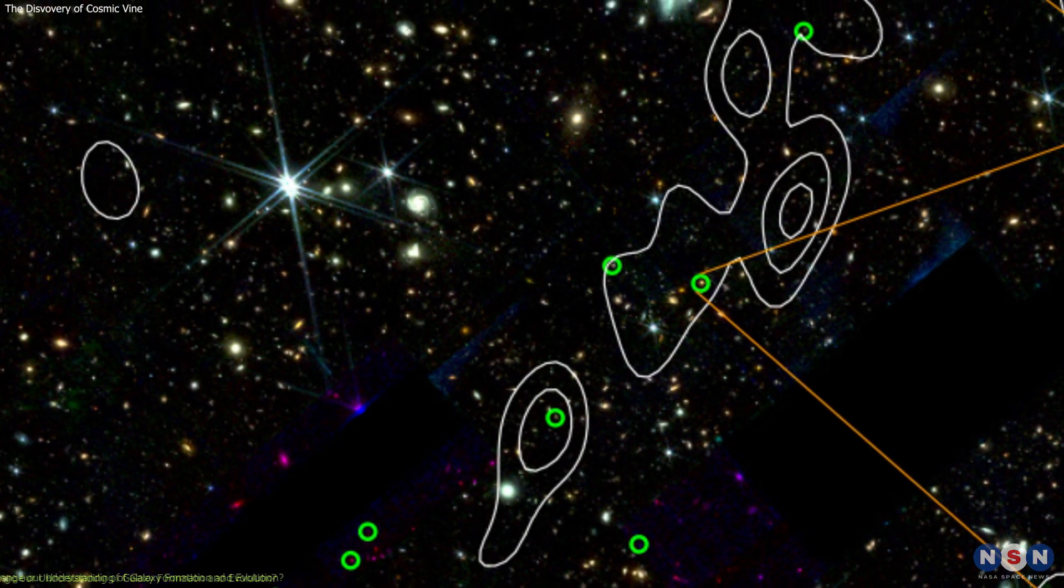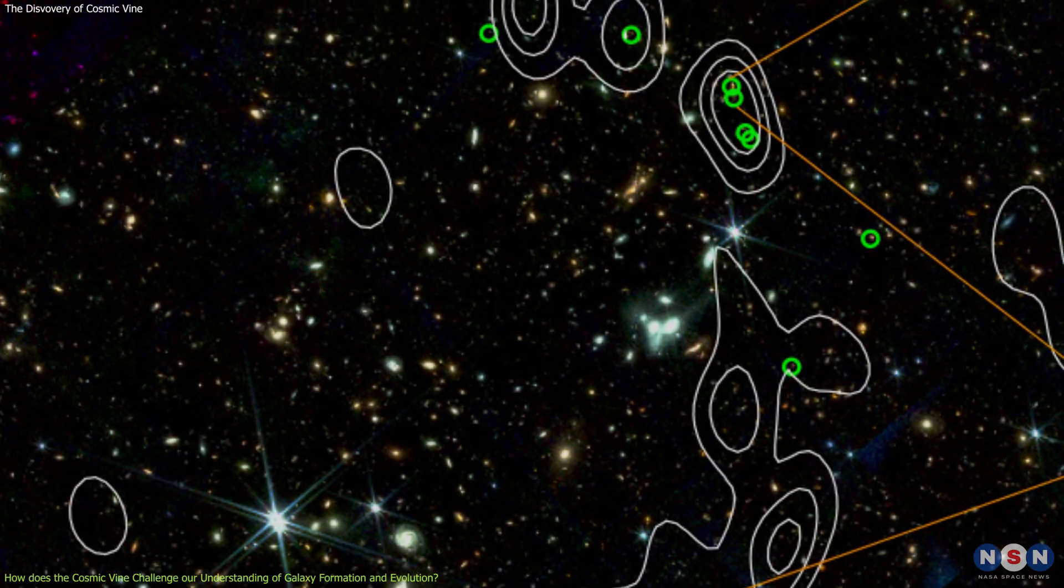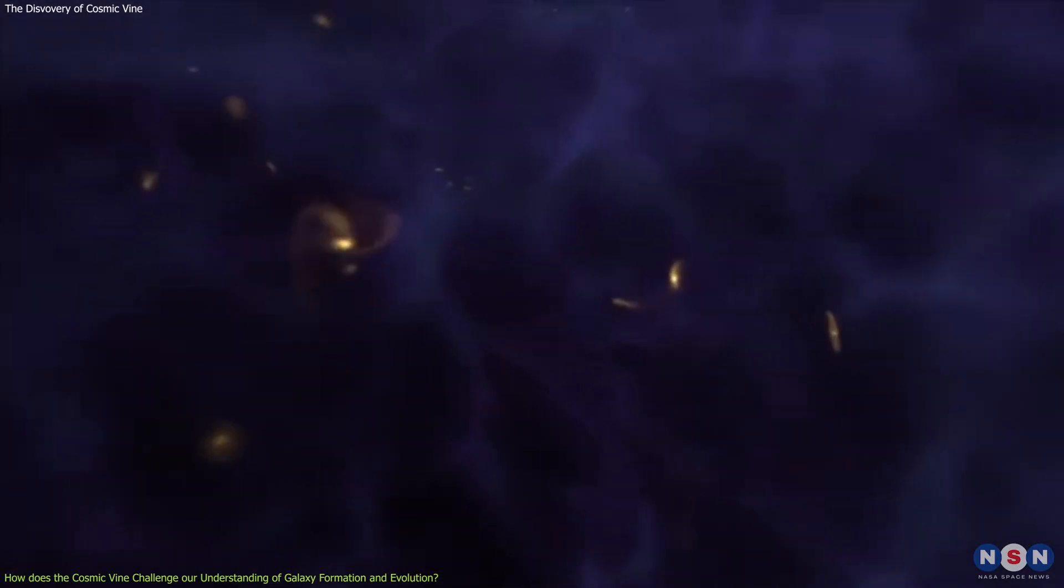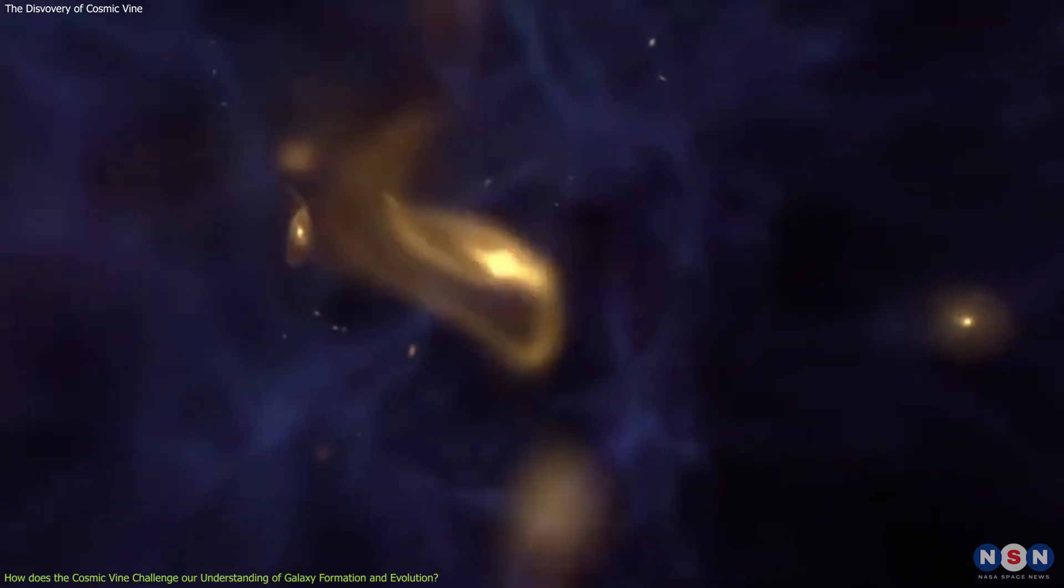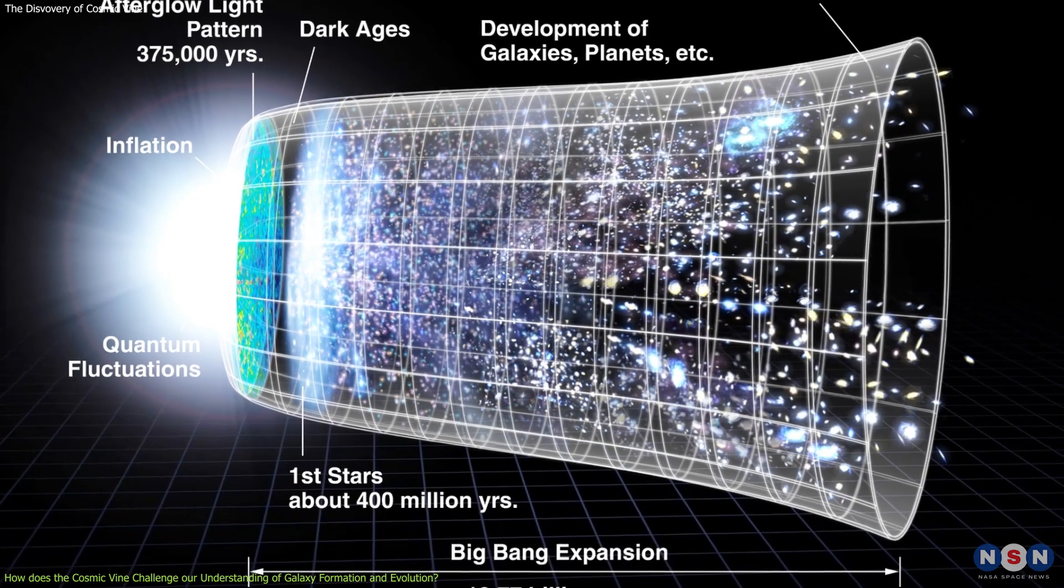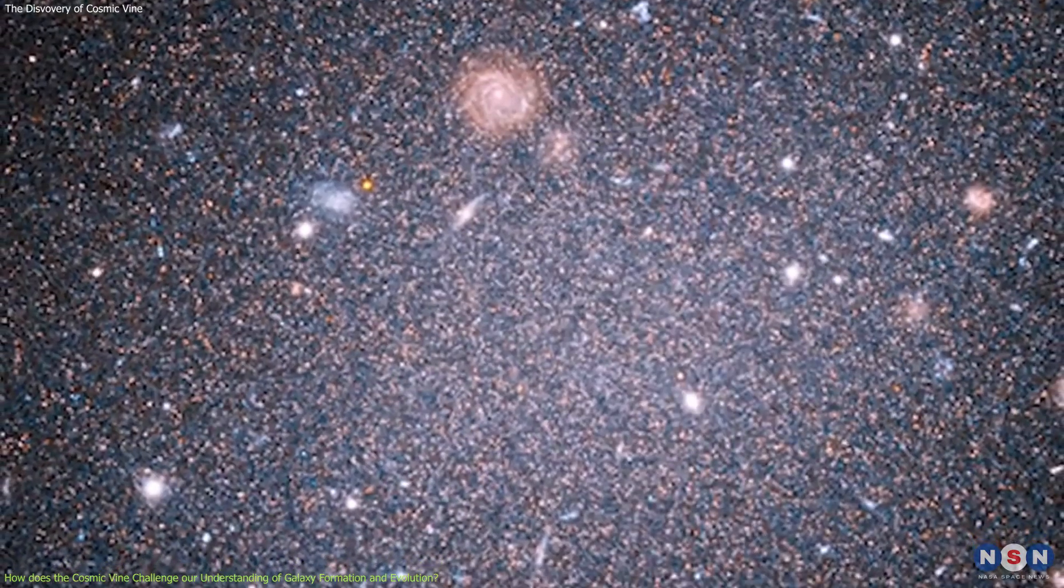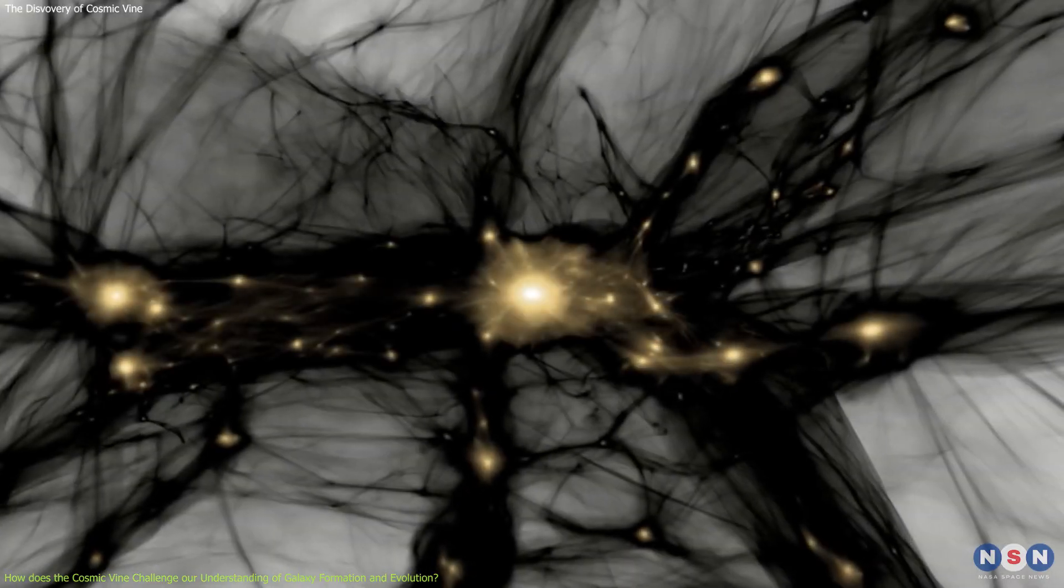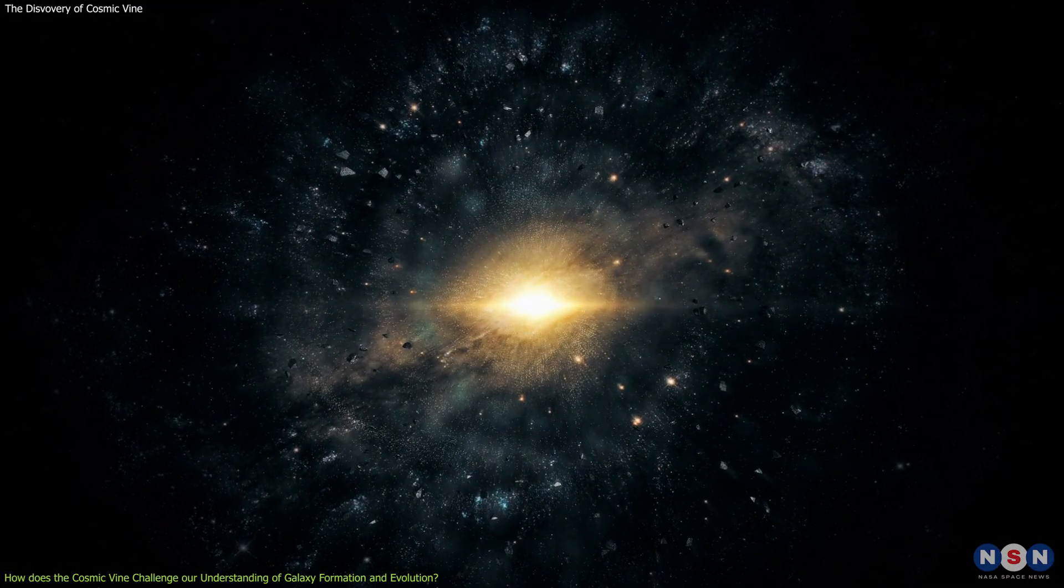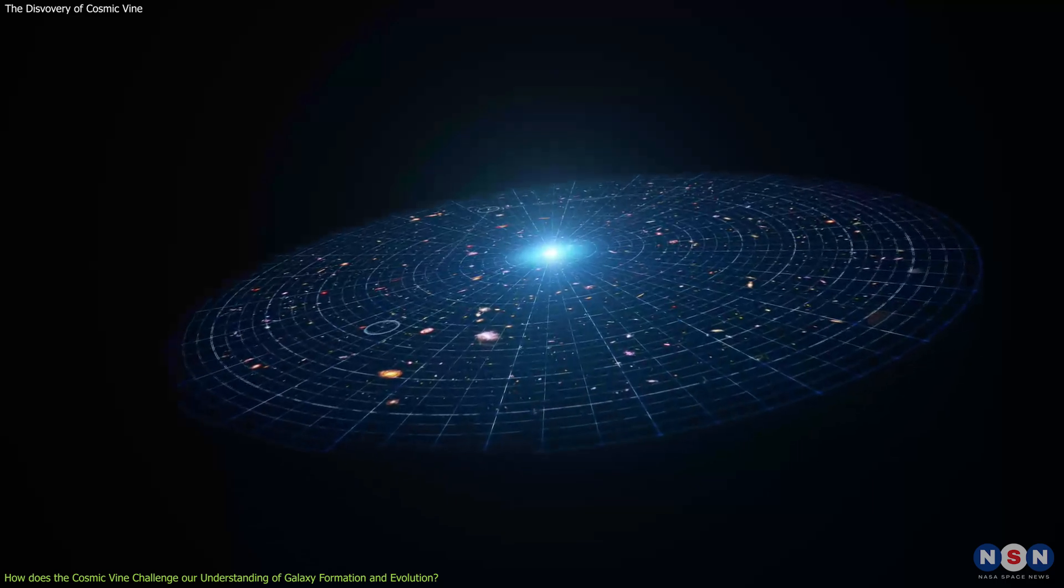The Cosmic Vine is not only a fascinating structure to observe, but also a challenging structure to explain. It poses some problems and puzzles for the current models and theories of galaxy formation and evolution, which are based on the Standard Cosmological Model, also known as the Lambda Cold Dark Matter, or LCDM model. This model assumes that the universe is composed of about 70 percent dark energy, 25 percent dark matter, and 5 percent ordinary matter, and that it began with a big bang, followed by a period of rapid inflation, and then a gradual expansion and cooling.